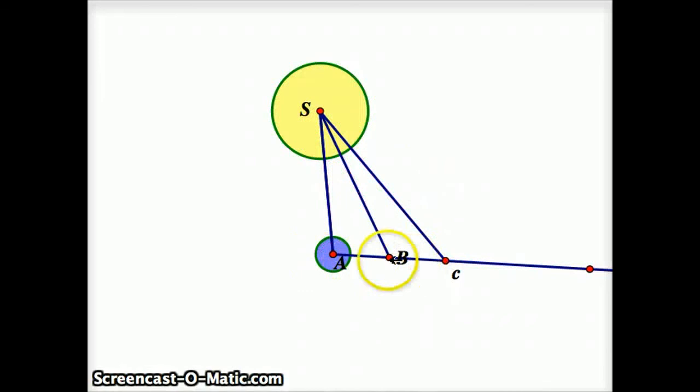you'll be able to see that not only do they have the same bases, A, B, and B, C are the same length, but their heights are the same also because the height would be the sort of perpendicular distance from S down perpendicular to this line,